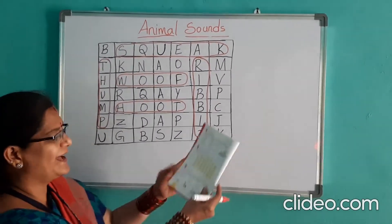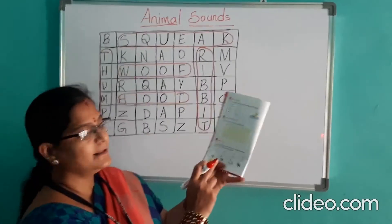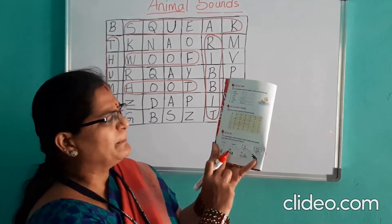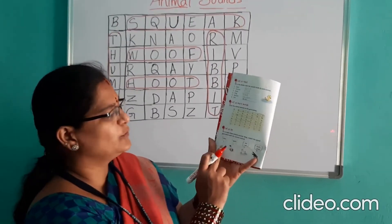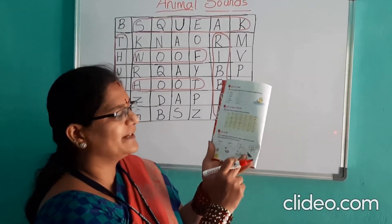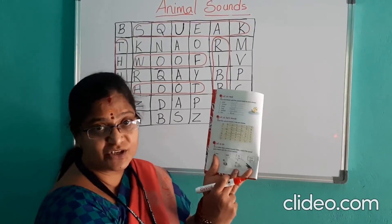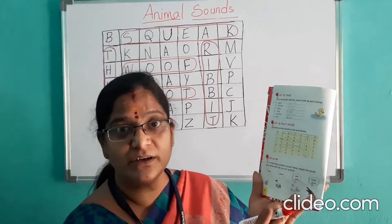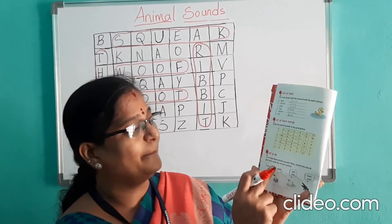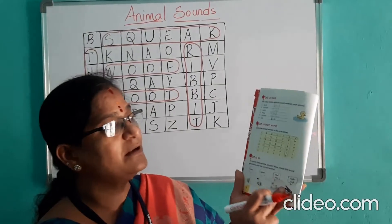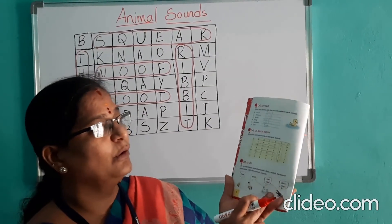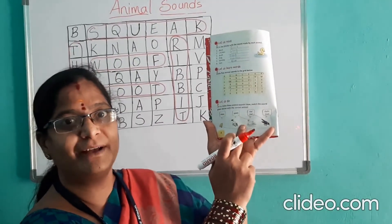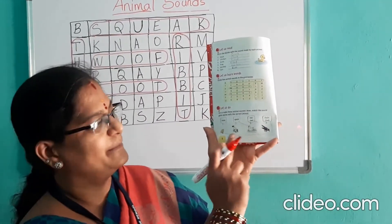Now, next, you have the third bit — matching. You have to identify the picture and match it to the sound of an animal.